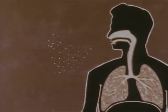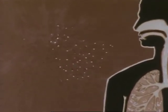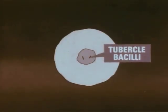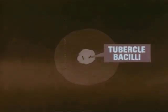Once outside the body, these droplets — the larger of which we see as mist — evaporate rapidly. Their solid residue, called the droplet nucleus, may contain one or more tubercle bacilli. These tiny nuclei are light enough to remain floating about until vented to the outdoors.